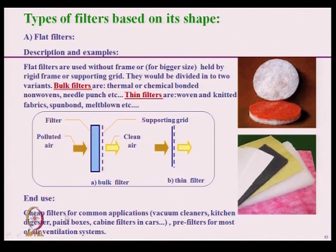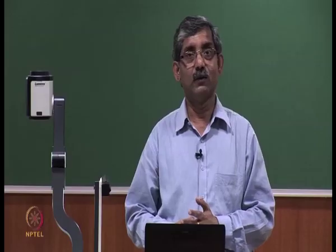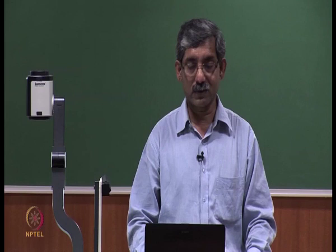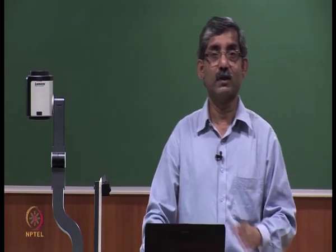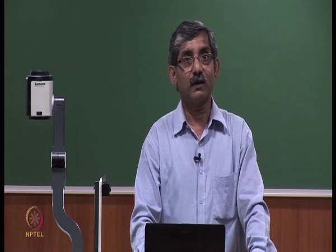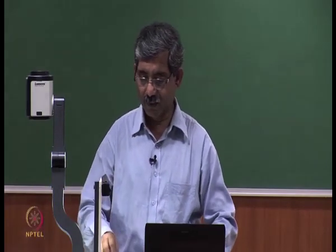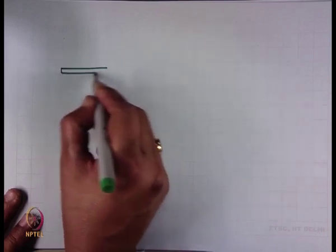End uses of flat filters are cheap filters for common applications like vacuum cleaners, kitchen digesters, and paint boxes — wherever the filter shape needs to be flat. They are also used as pre-filters in air ventilation systems. The pleated filter is basically a variation of the flat filter.